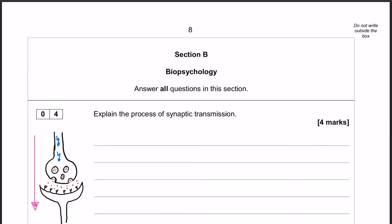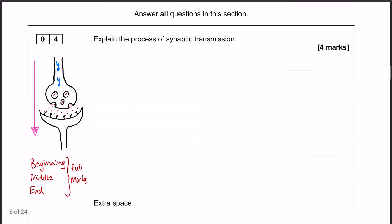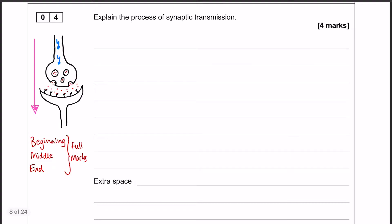Okay, welcome to biopsychology. Approaches is all done and dusted and we are now on to section B with question number four. This is explain the process of synaptic transmission for four marks. So straight off the bat, this question is going to be full of keywords.